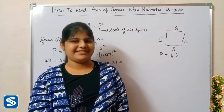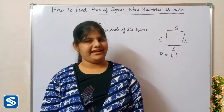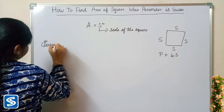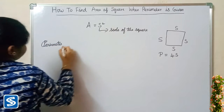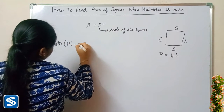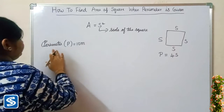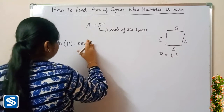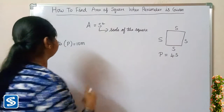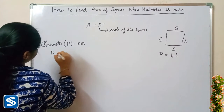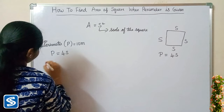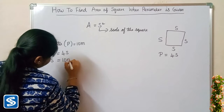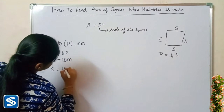Next we will take one more example. For example, we can take: perimeter P is equal to 10 meters. To find the side of the square we have to substitute this value in the formula: perimeter P is equal to 4S.